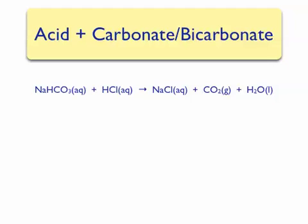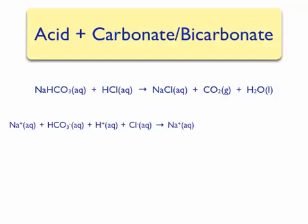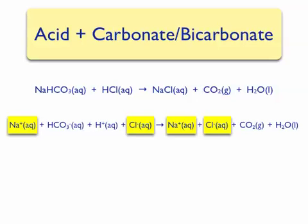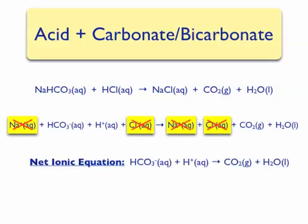Sodium bicarbonate and hydrochloric acid yield sodium chloride, carbon dioxide gas, and water. We can also write complete and net ionic equations. Sodium bicarbonate is a strong electrolyte and dissociates to form sodium ions and bicarbonate ions. Hydrochloric acid is also a strong electrolyte and dissociates to form H⁺ ions and chloride ions. Sodium chloride also dissociates into sodium and chloride ions, since it is a strong electrolyte. However, carbon dioxide gas and liquid water are not dissociated. The sodium and chloride ions are spectators, so we cancel them out. The net ionic equation reads: bicarbonate ion plus hydrogen ion yields carbon dioxide and water.